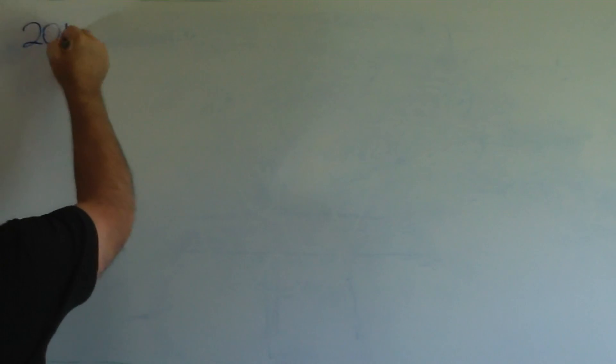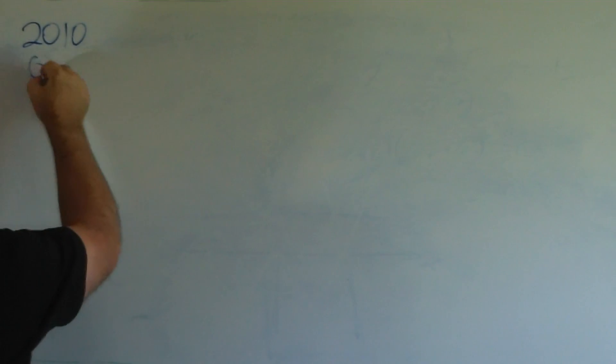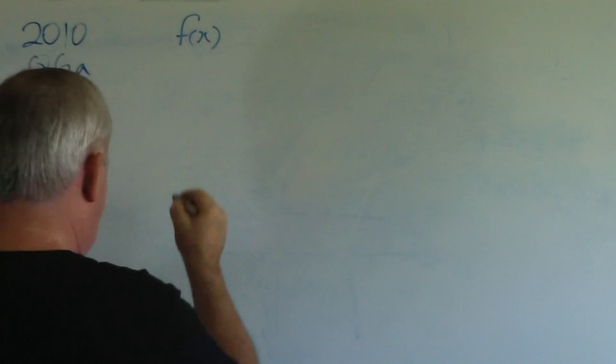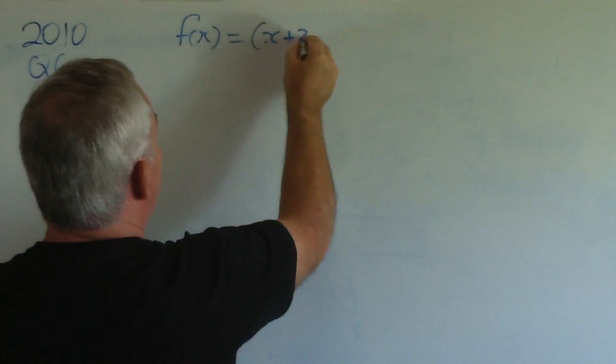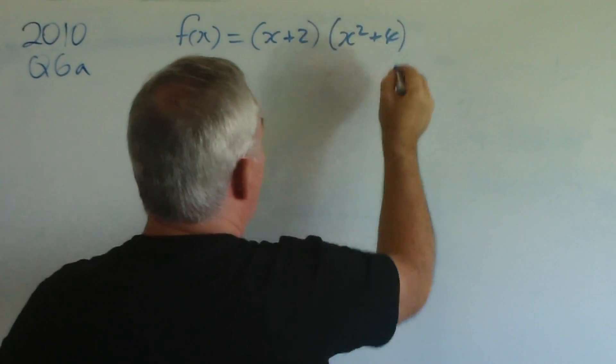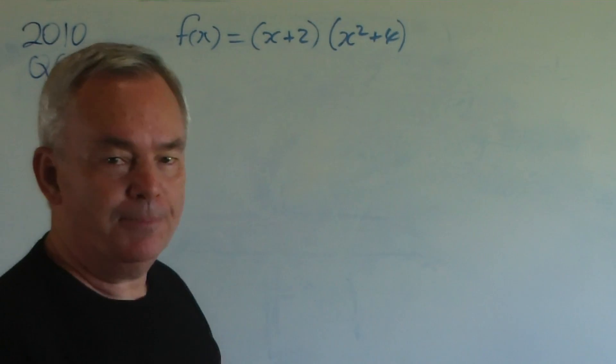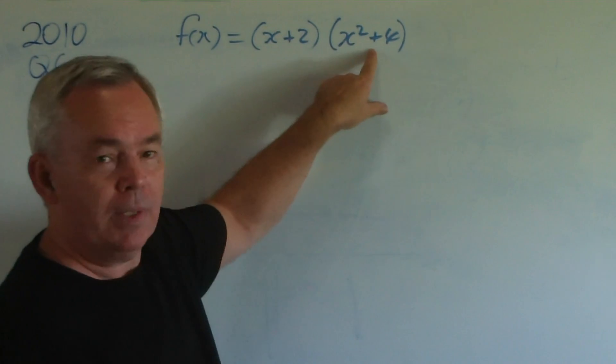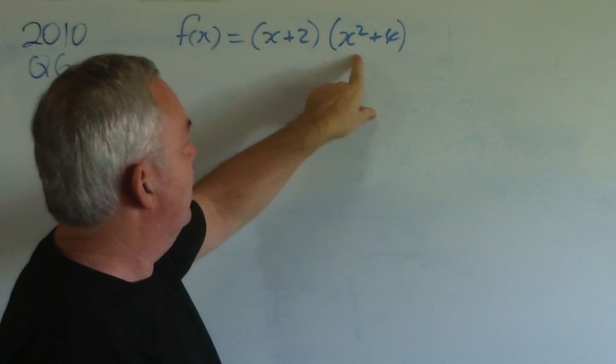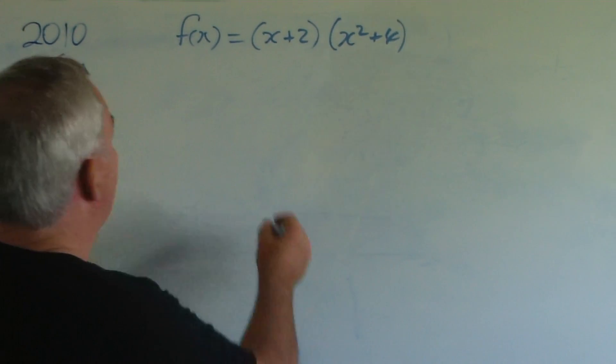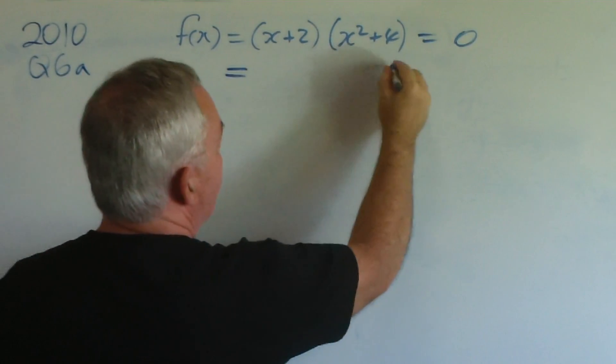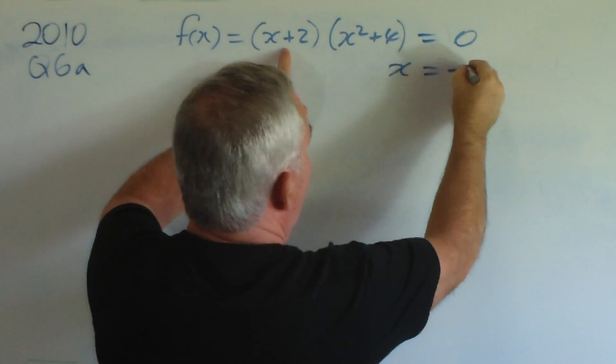2010, Question 6a. The function for this year's HSC was (x + 2)(x² + 4). Now, this was an interesting year. It was the first year that we had a factor, a quadratic, that could not be factorised in real numbers. Consequently, if we find the roots, there is only one real root at minus two.